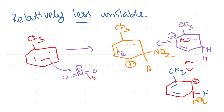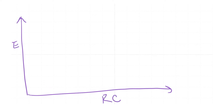Therefore, we would call the meta intermediate as relatively less unstable. The reason I use two negatives here is that I am not suggesting this intermediate is very stable — it still has an electron withdrawing group attached to it. But when you compare this with the ortho and para structures, having an electron withdrawing group right next to the positive charge makes those more unstable. The preference for meta happens because ortho and para are actually more unstable.